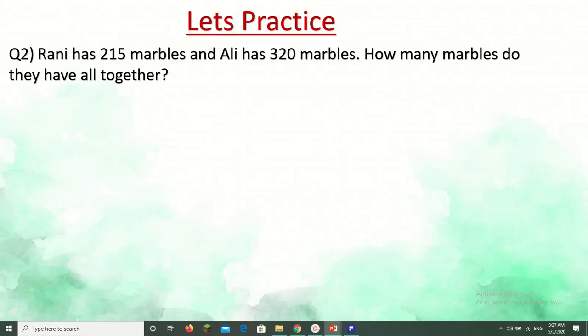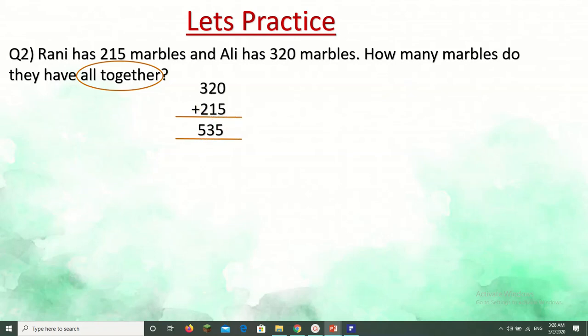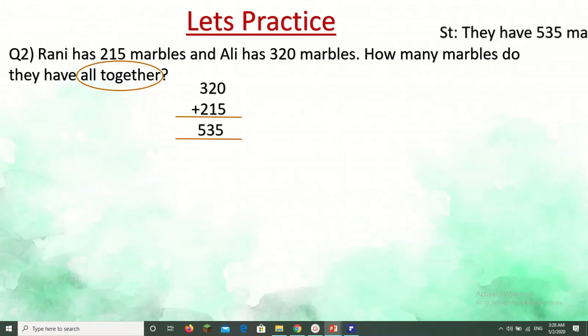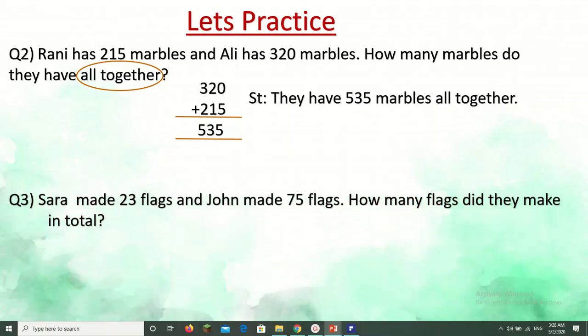Rani has 215 marbles and Ali has 320 marbles. How many marbles do they have altogether? We underline the numbers first, then check for the keyword. The keyword is 'altogether,' so this is also an addition. 320 plus 215 equals 535. We end with a statement: they have 535 marbles altogether.